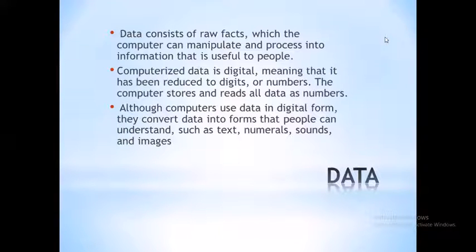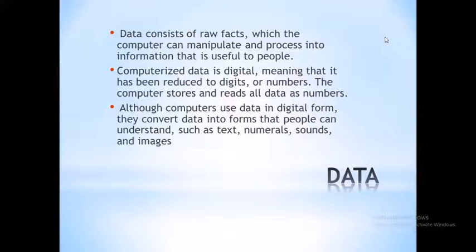Data consists of raw facts which the computer can manipulate and process into information. For example, one and two are data; three is the information. Computerized data is digital, meaning it has been reduced to digits or numbers. The computer stores and reads all data as numbers, but can convert data into forms people can understand, such as text, numerals, sounds, and images.